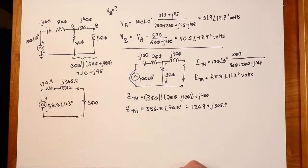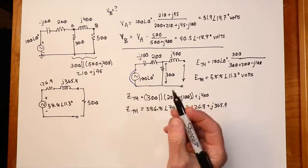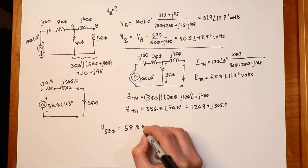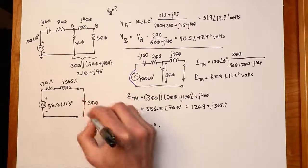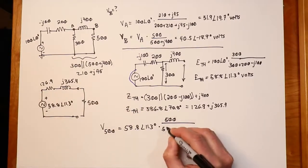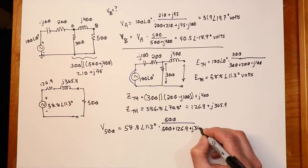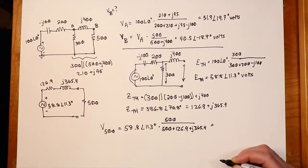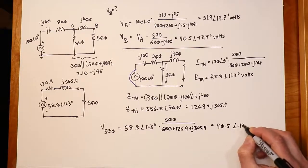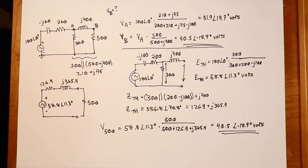So how do we compute this value? Well, now that we have the Thevenin equivalent, this is a fairly straightforward computation. It's just a series circuit. I can do a voltage divider on this really quick. So the voltage on the 500, or VB if you prefer, will be our source 58.8 at an angle of 11.3, times the thing we're interested in, 500, over the combined impedance, 500 plus 126.9 + j365.4. So, grind this out, and you will come up with 40.5 at -18.9 degrees, which is precisely what we were expecting.